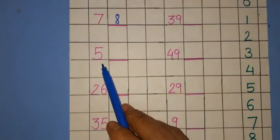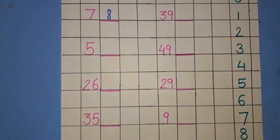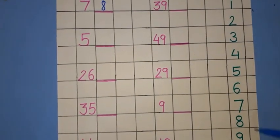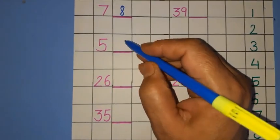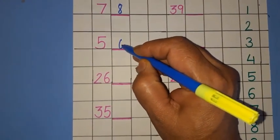And your next number is 5. So, where is the 5? Find it here. 5. What comes after 5? 6. So, you have to write 6 here.